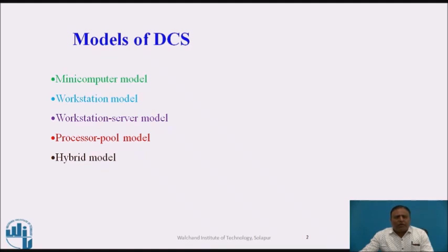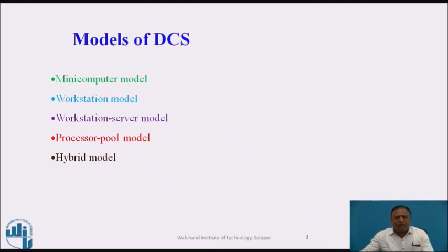There are five models of distributed computing systems. The first one is the mini computer model, the second is the workstation model, the third is the workstation server model, the fourth is the processor pool model, and the fifth is the hybrid model. A distributed system is the interconnection of different computers or systems by using a communication network for resource sharing. The resources may be hardware resources or software resources.